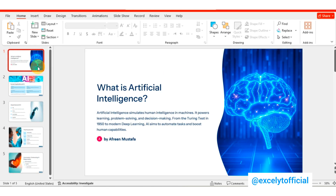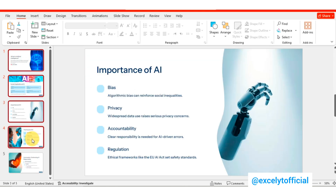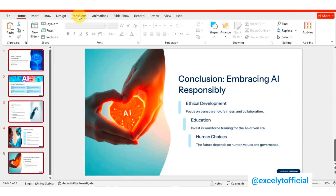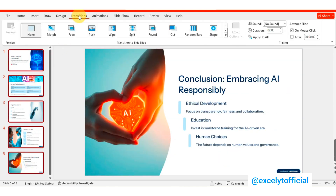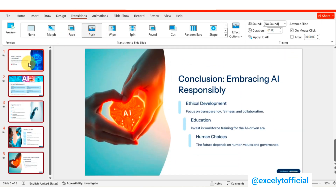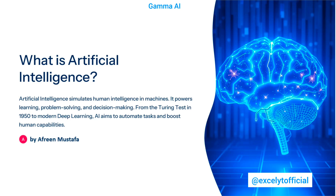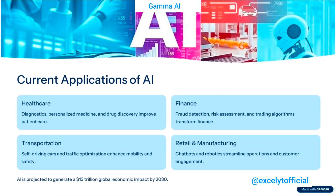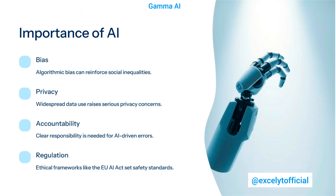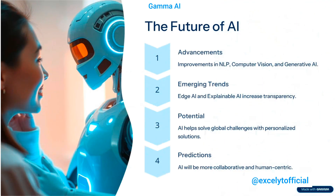Now let's finalize it in PowerPoint. Open the presentation, add some sleek transitions, and you're all set. Hit Slide Show and enjoy your professionally crafted presentation powered by Gamma AI. And that's it — you've successfully created a stunning presentation using Gamma AI.